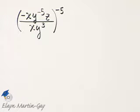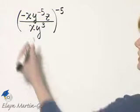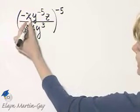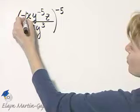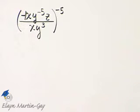Let's simplify this expression and write with positive exponents only. Notice I have negative x here in the numerator. I think I'm going to write it as negative 1x, and we'll just treat the negative 1 separately from the x then.